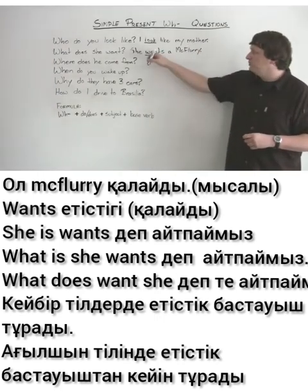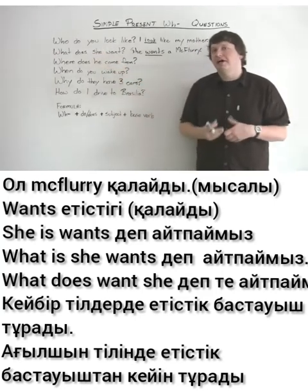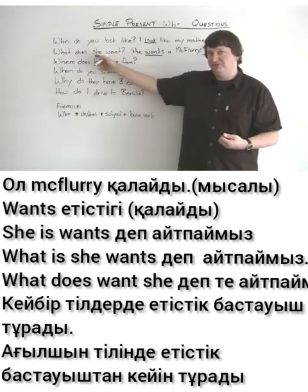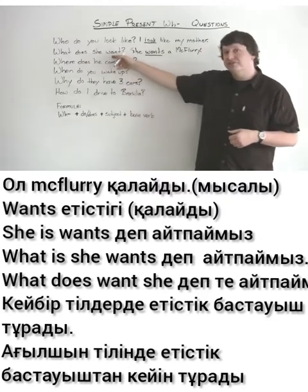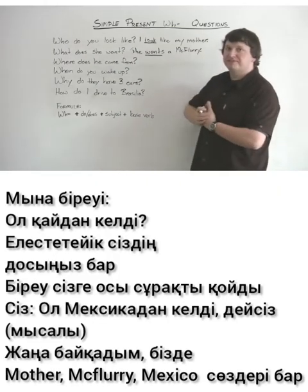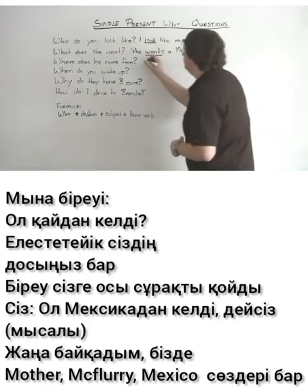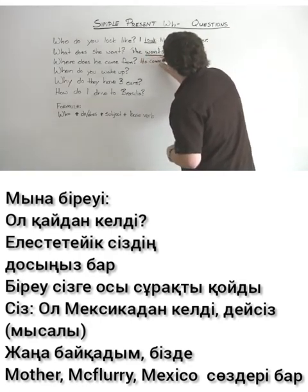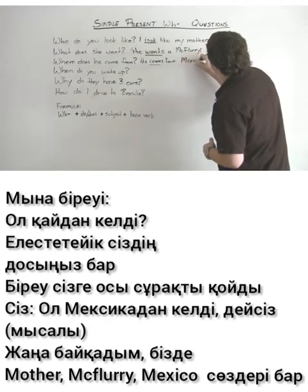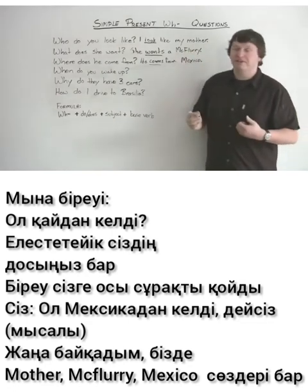We do not say 'she is want,' so we do not say 'What is she want?' We also do not say 'What does want she?' In English, you put the verb after the subject at the end of the question. For example: 'Where does he come from?' He comes from Mexico. I just noticed we have Mother, McFlurry, Mexico — lots of M's!